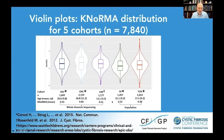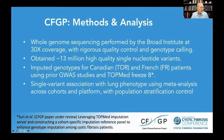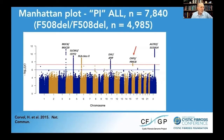We did whole genome sequencing in the first three cohorts, which allowed imputation of the French and Toronto datasets. The age range varies across cohorts — UNC, for example, being the oldest at age 26 when K-NORMA was calculated, and the UW cohort being only age 13. We used standardized high-quality whole genome sequencing with quality control, generating millions of genetic variants. We imputed genotypes of the Canadian and French patients using TOPMed freeze-8. The analysis was a standard single-variant analysis of lung phenotype using meta-analysis across cohorts and platforms.